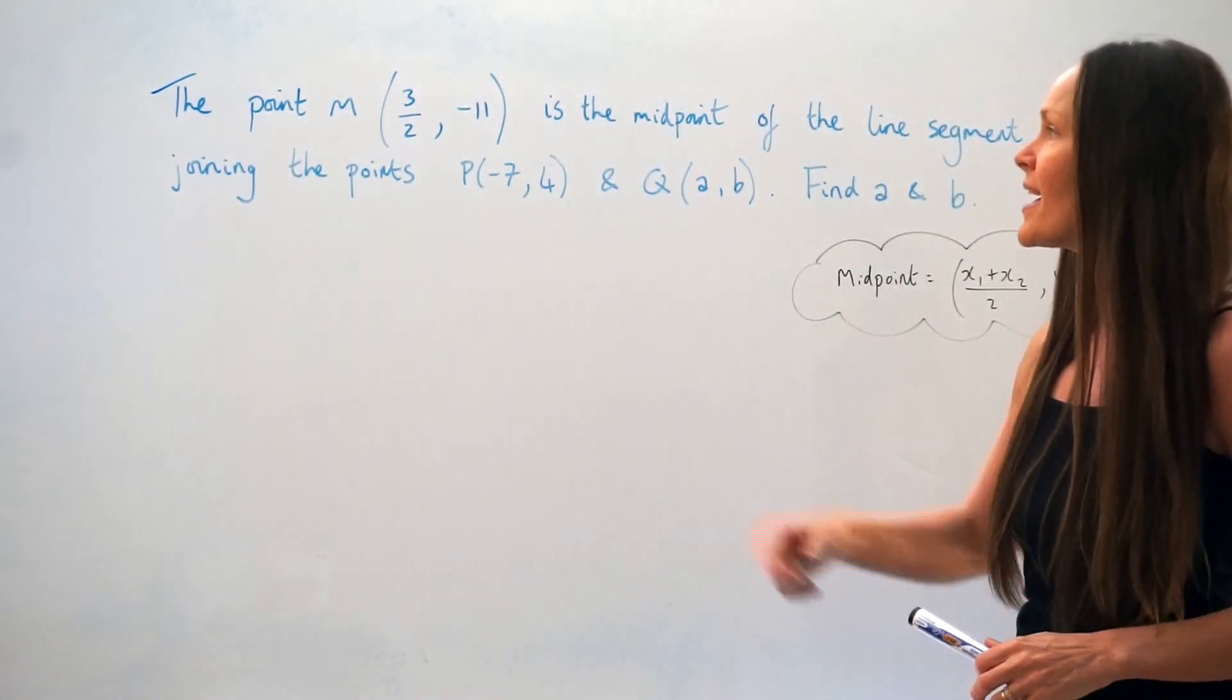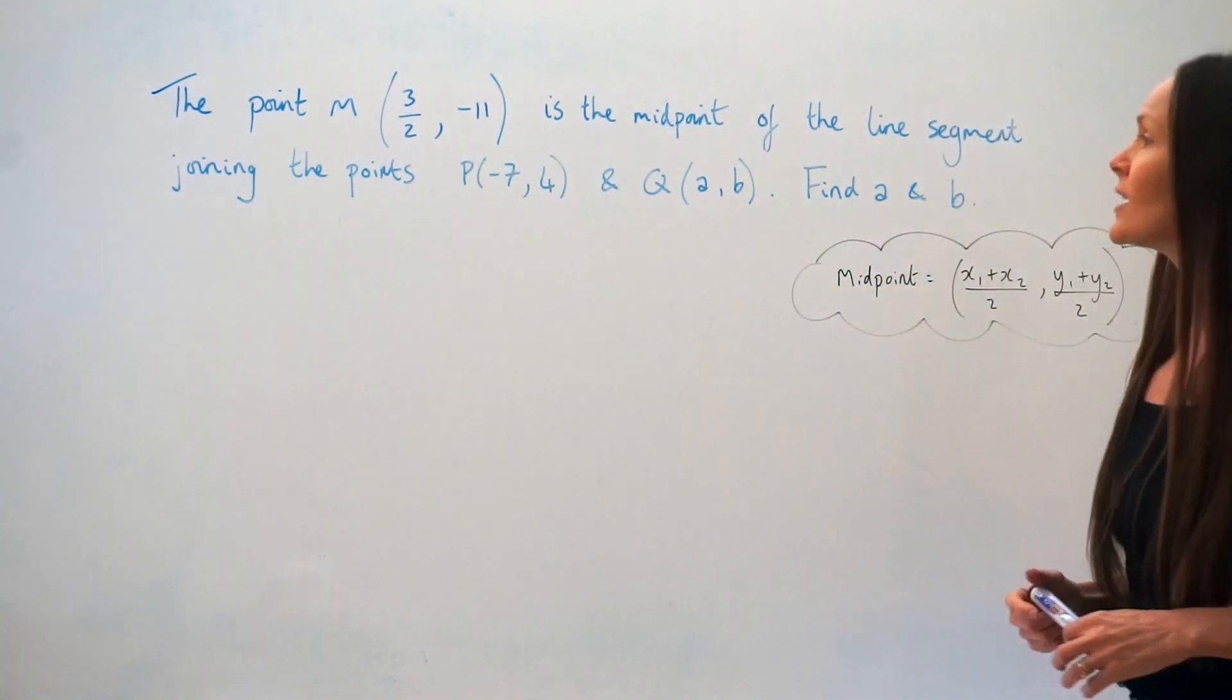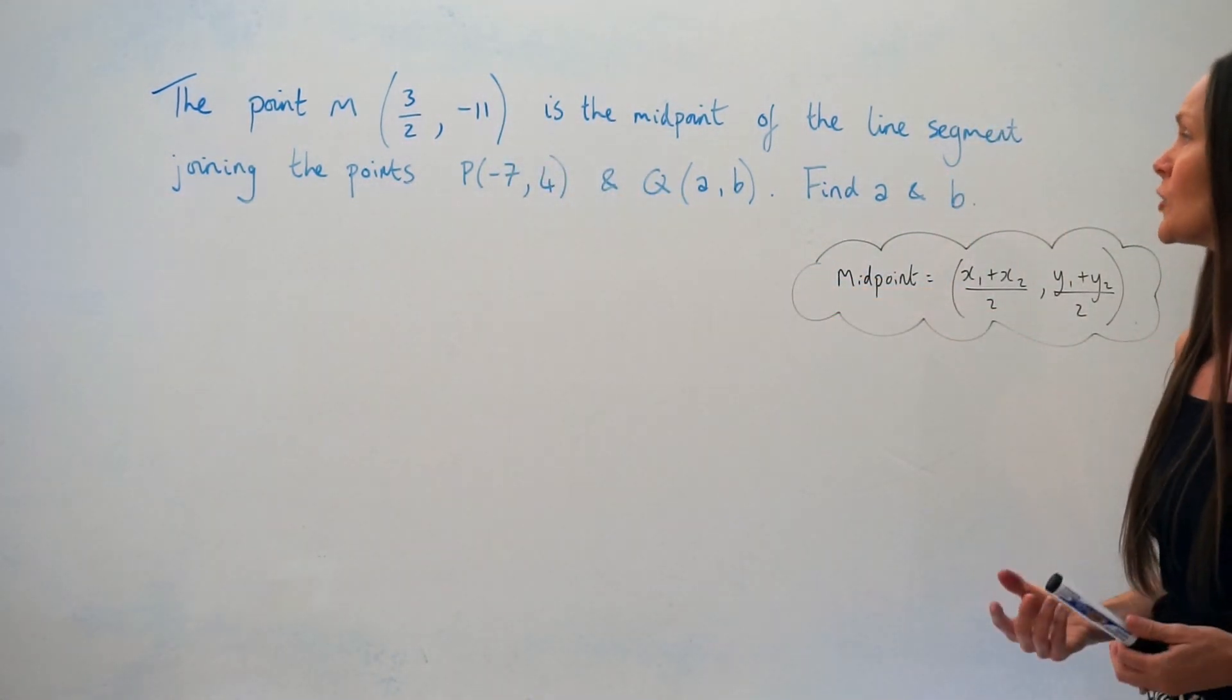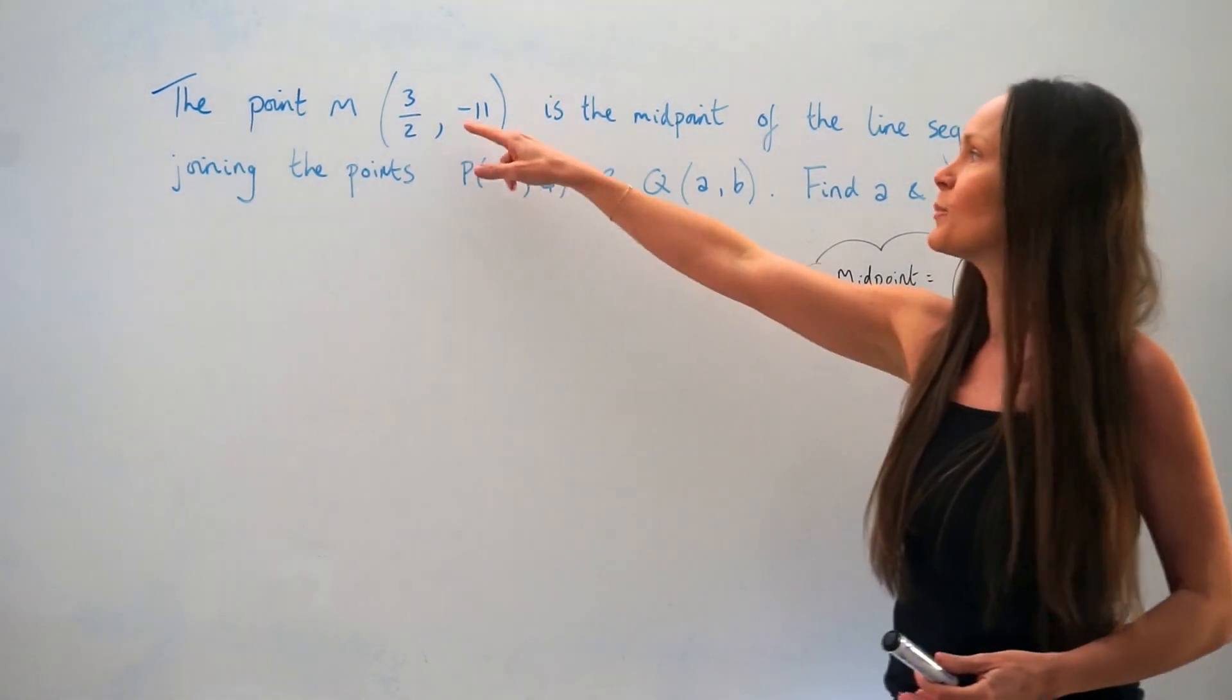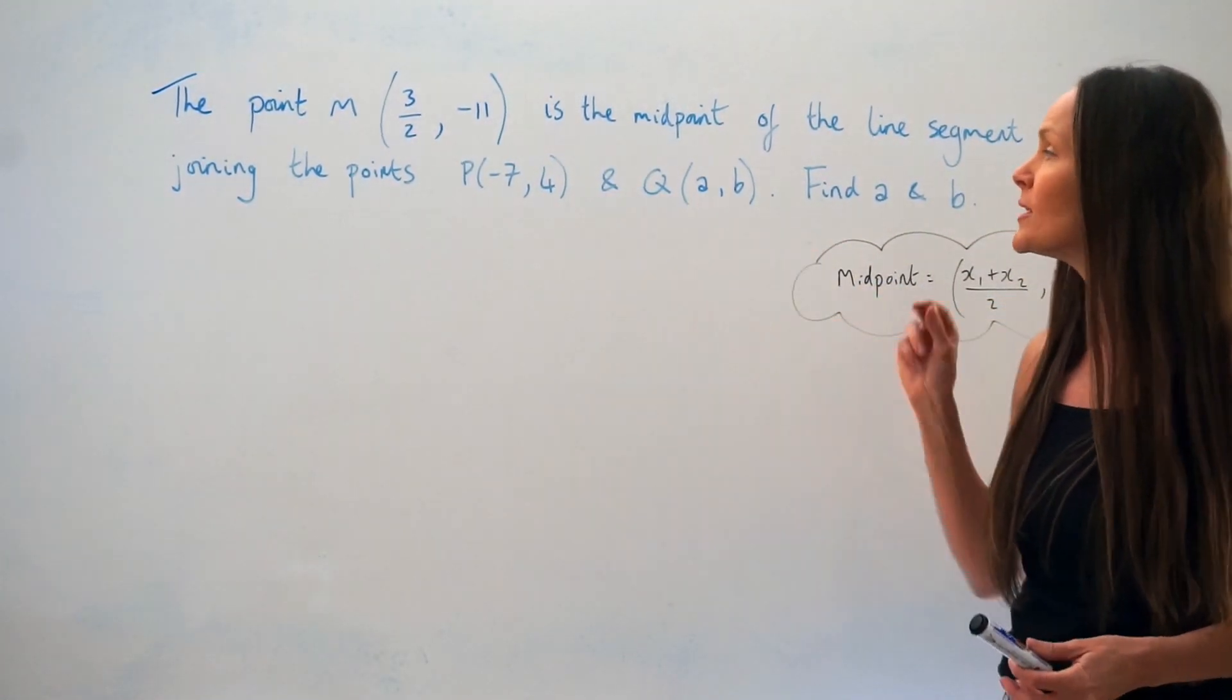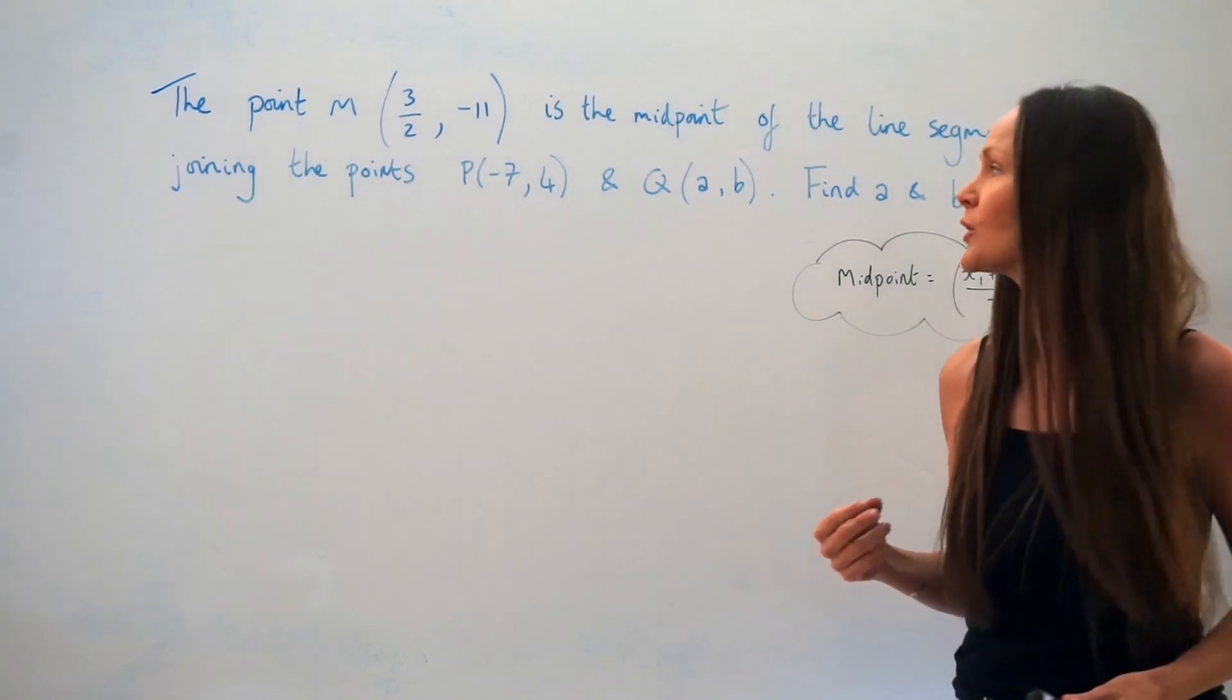In this question, it says the point M is the midpoint of the line segment joining the points P and Q. Find the values of A and B. So we're told what the midpoint is. We have one of the endpoints P, but we don't know the precise coordinates of point Q.